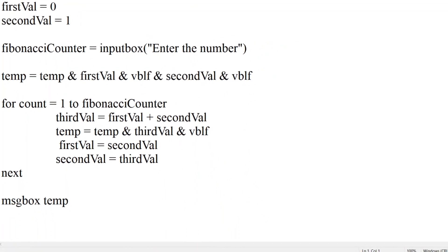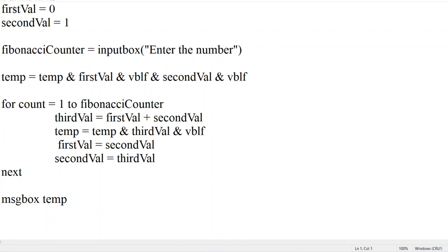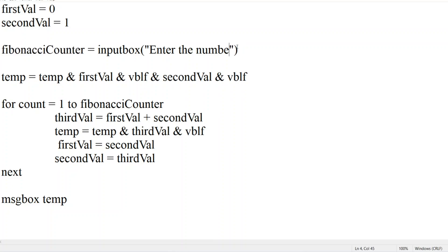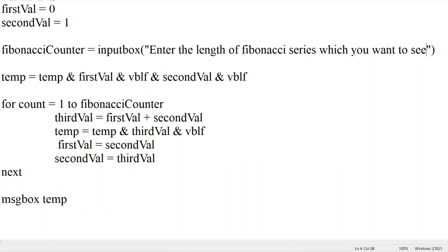Let me minimize the screen. The first_val we have taken is zero and second_val is one. The fibonacci_counter is the user input — let me rename the prompt to 'Enter the length of Fibonacci series which you want to see,' which is a clearer question for the user. They will understand this is the length, and they might enter five, ten, or even a thousand to see what the Fibonacci series looks like.